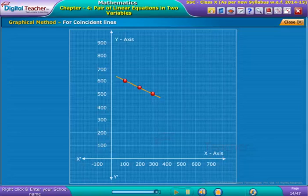Here, we cannot find the cost of each bat and ball because we have the equations with infinitely many solutions as they are coincident lines as shown on screen.